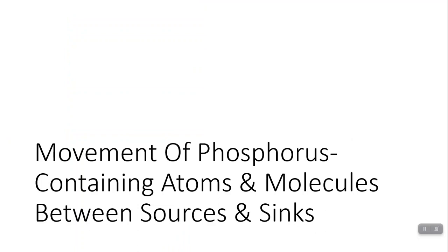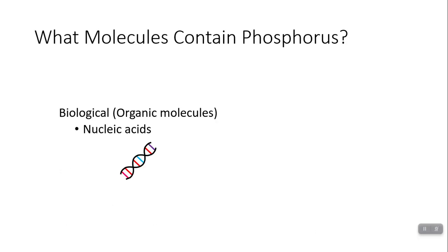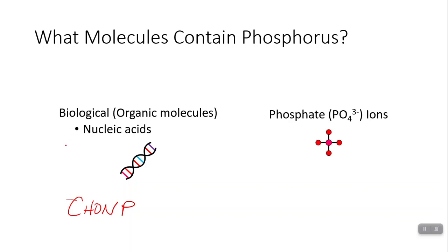Phosphorus is also going to be an important atom for living things. As far as biological molecules — organic molecules — it's just nucleic acids. You may remember the acronym CHOMP: carbon, hydrogen, oxygen, nitrogen, and phosphorus, which is present in nucleic acids because they have phosphate groups. Any compound with a phosphate ion — PO4, a negatively charged ion — is going to be a phosphate group.